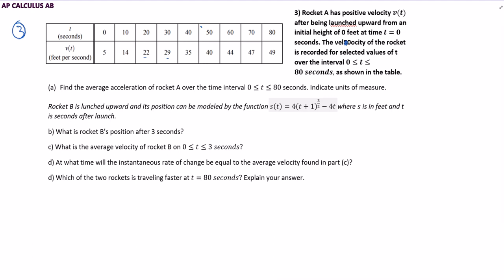So for part A, we're asked to find the average acceleration of rocket A over the time interval from 0 to 80 seconds and indicate units of measure. So we're trying to find the average acceleration. And so we have to remember, what is the acceleration? The acceleration is the rate of change of velocity.